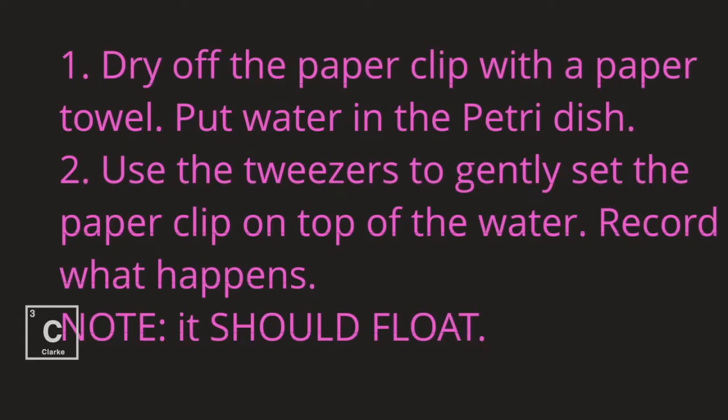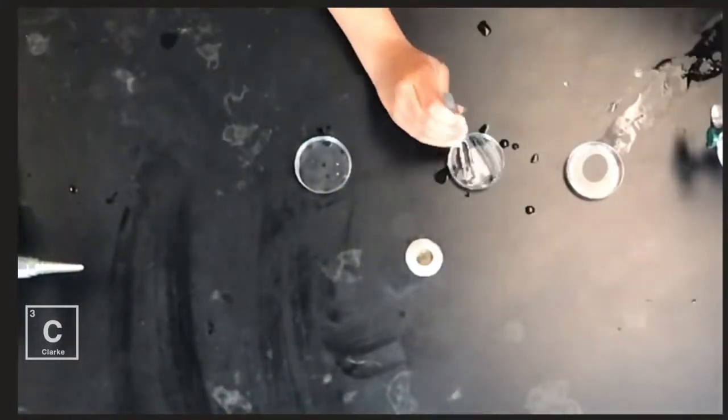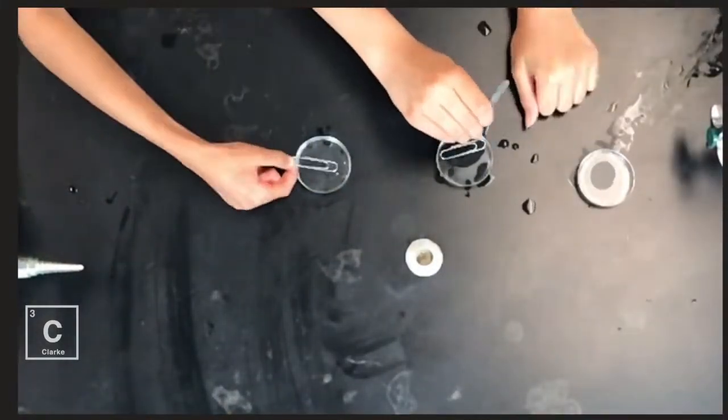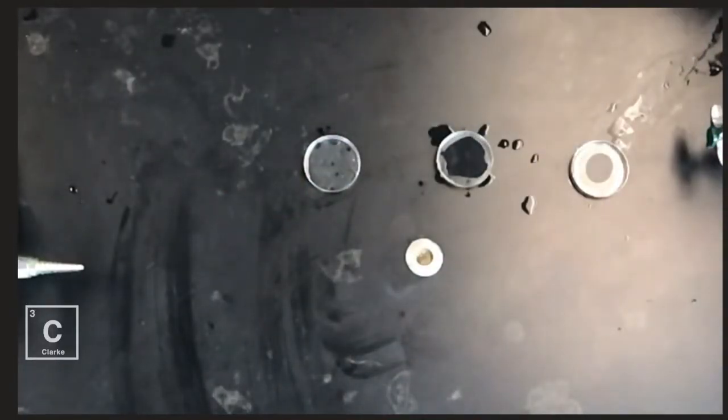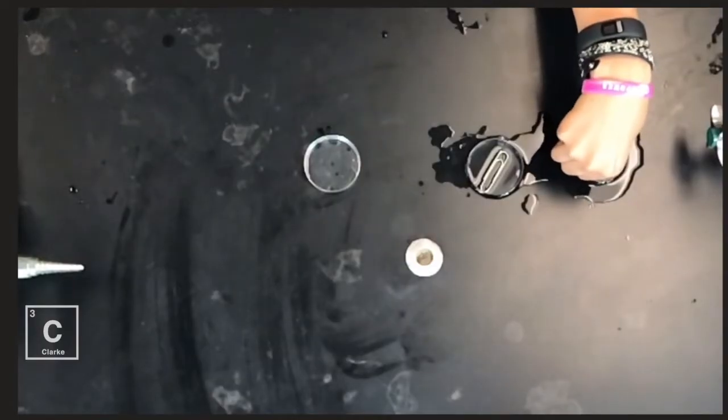Dry off the paper clip with a paper towel. That's super important. Put water in the petri dish. Use the tweezers to gently set the paper clip on top of the water. Record what happens. Y'all, it should float. I did it! Yeah! Good job, Chrisette!